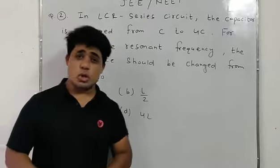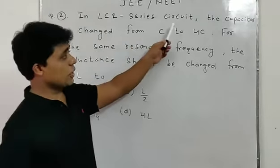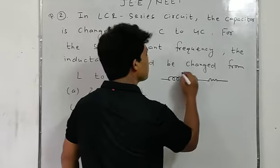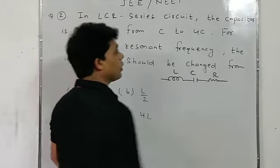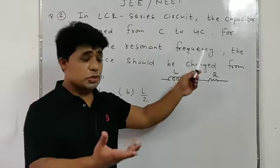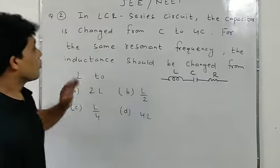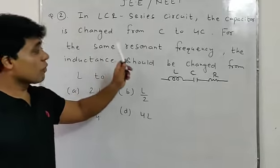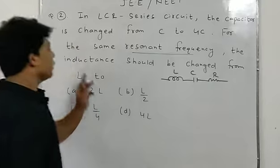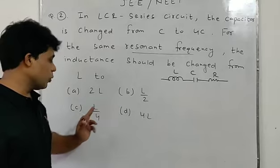Now question number two. In an LCR series circuit — inductor L, capacitor C, and resistance R connected — the capacitor is changed from C to 4C. For the same resonant frequency, the inductance should be changed to which value? Options: 2L, L/2, L/4, and 4L.